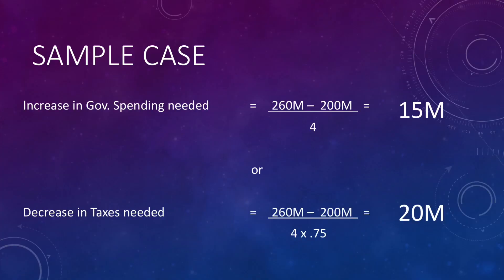As a result, the necessary increase in government spending is calculated from the required GDP increase of 60 million (260 minus 200 million), divided by the multiplier of 4, giving an increase in government spending of 15 million. Or, taxes should decrease by the following calculation: 260 million minus 200 million equals 60 million, but instead of dividing by 4, we divide by 4 times 0.75, giving us 20 million.